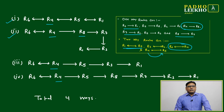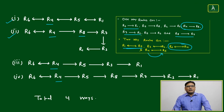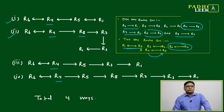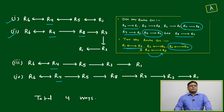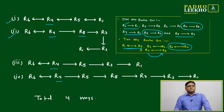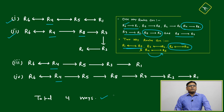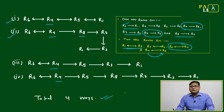Other valid routes include: R6 → R4 → R5 → R1, and R6 → R4 → R5 → R3 → R1. Similarly, R6 → R4 → R5 → R8 → R7 → R3 → R1. In total, four ways are available to travel from R6 to R1 without repeating any station.